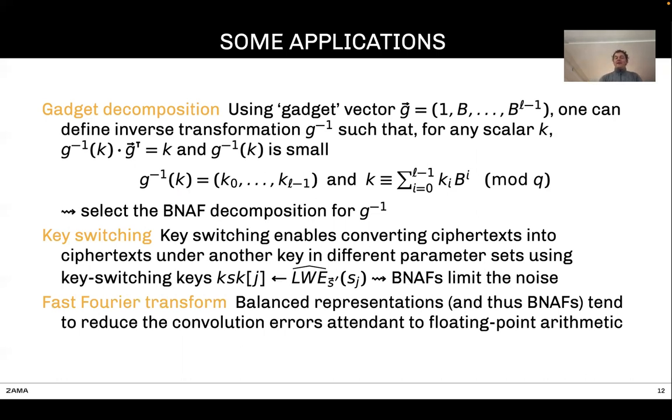Another operation is FFT. As you know, FFT is a very good way to get fast polynomial multiplication. What has been observed is that when the representation is balanced, which is the case for BNAF, all the errors relating to floating point arithmetic are lower. This is useful to use FFT, for example in FHEW or in TFHE, using those BNAFs to get reduced value of the round-off error.